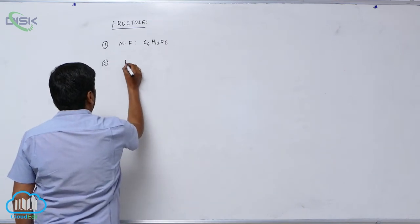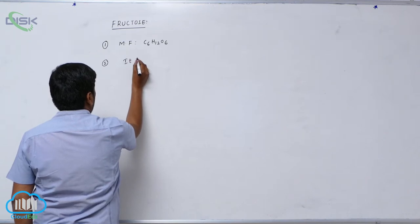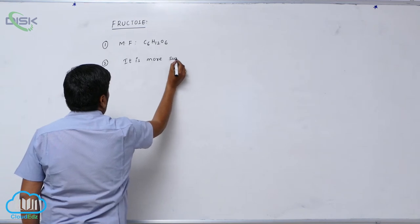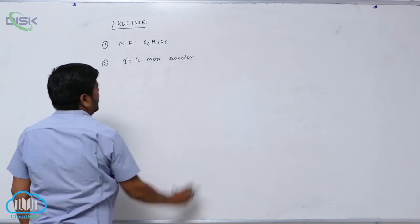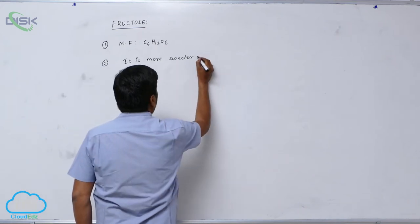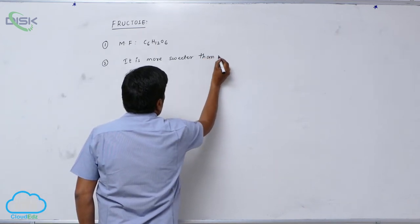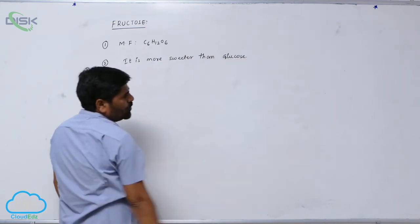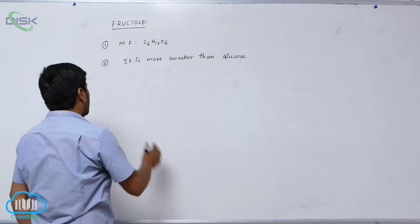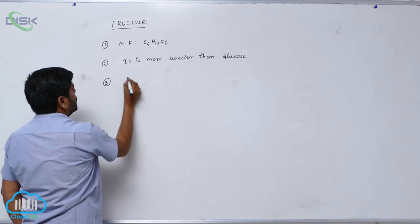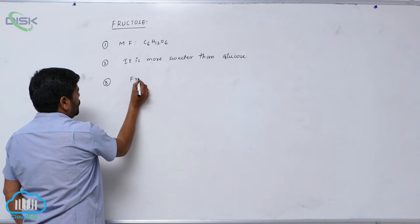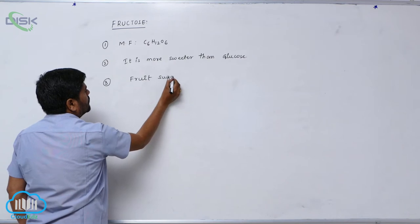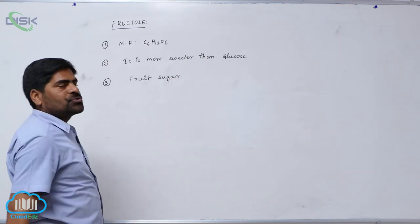The molecular formula of fructose is C6H12O6. It is sweeter than glucose. This is known as fruit sugar.